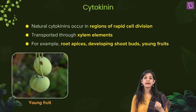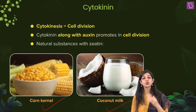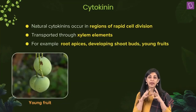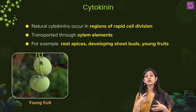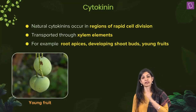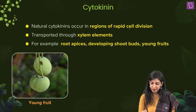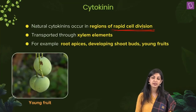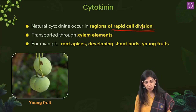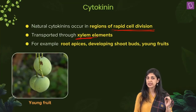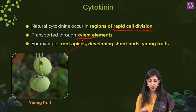The two rich sources of zeatin are corn kernel and coconut milk. Naturally, wherever active growth is happening in a plant, cytokinins will be present. In regions of rapid cell division, we can isolate cytokinins. They are transported through the xylem, and the key places to extract them include root apices, developing shoot buds, and young fruits.